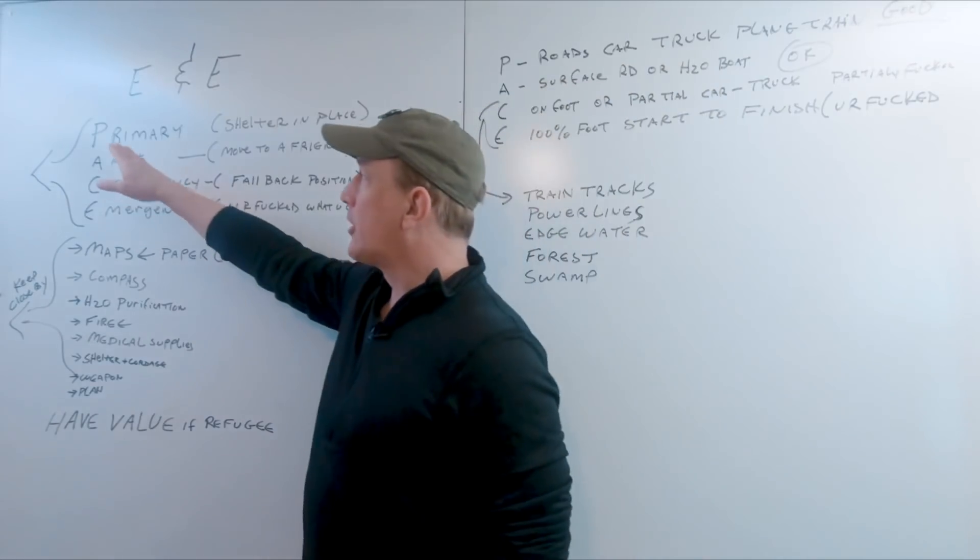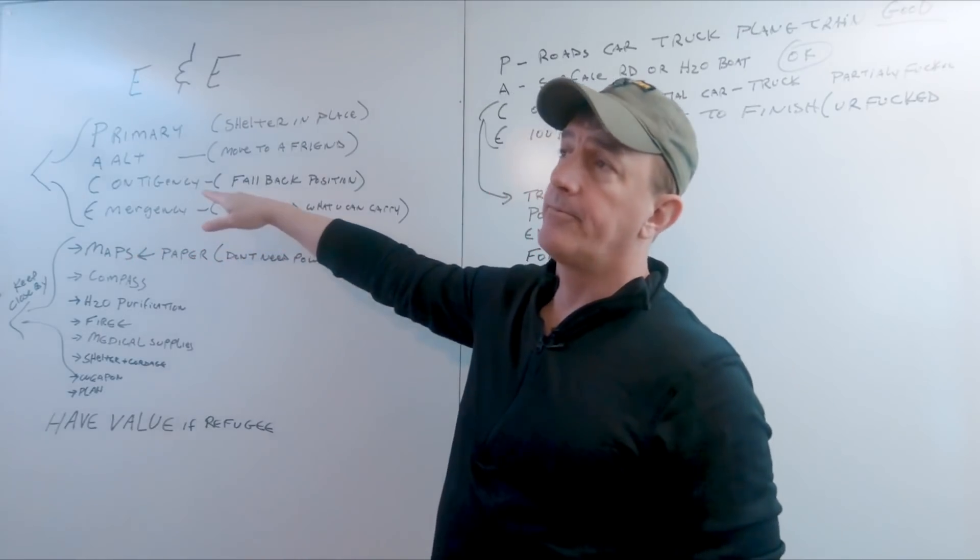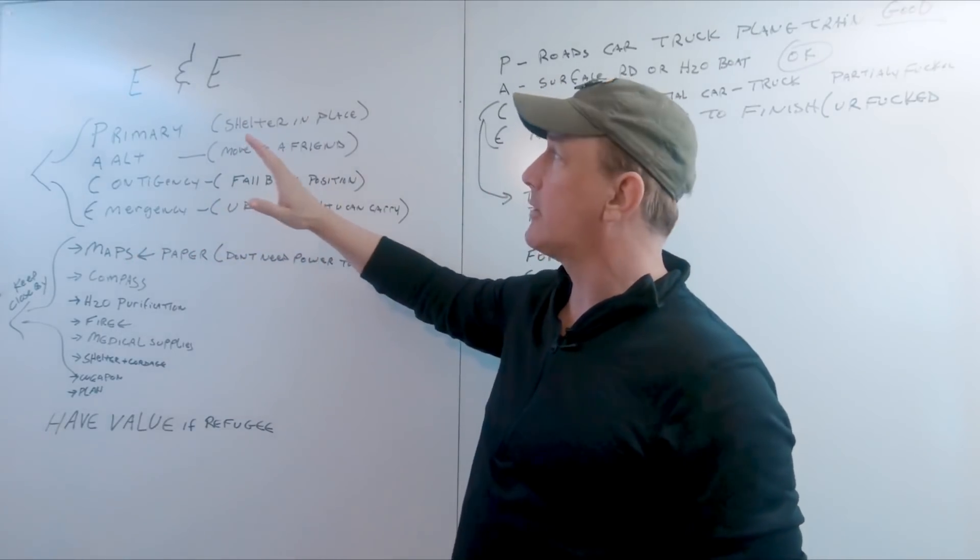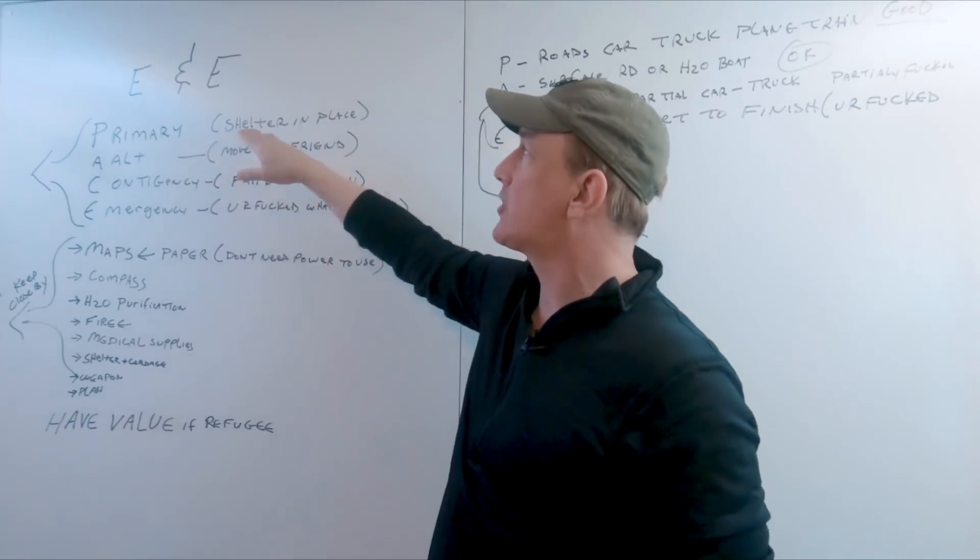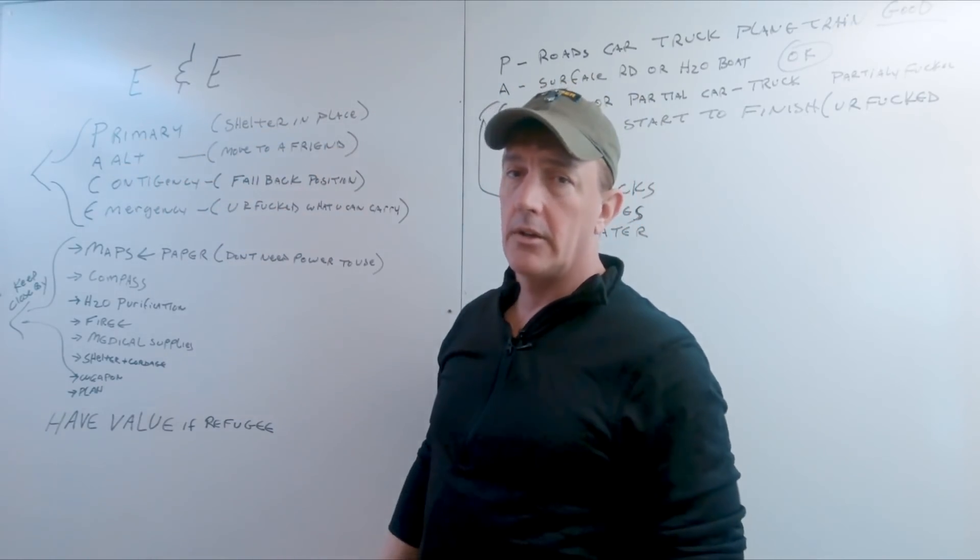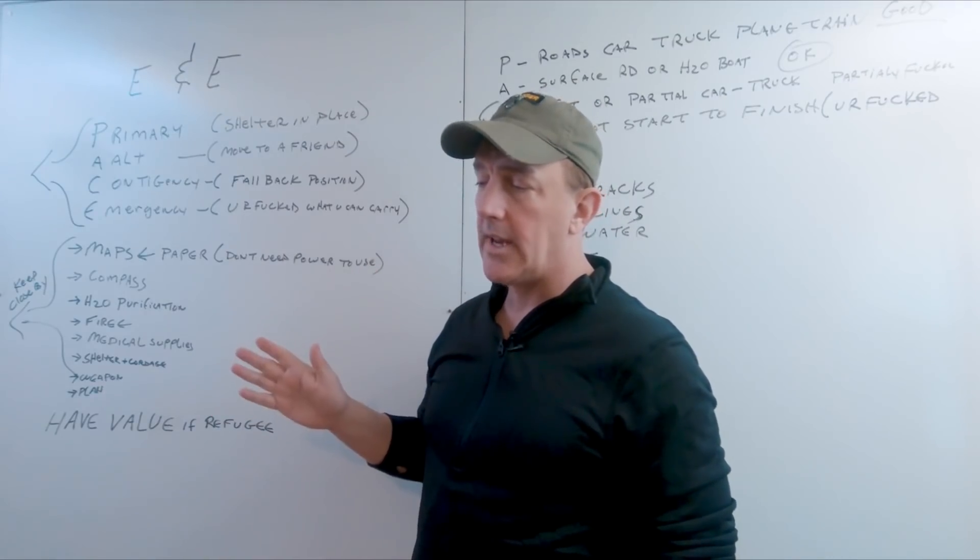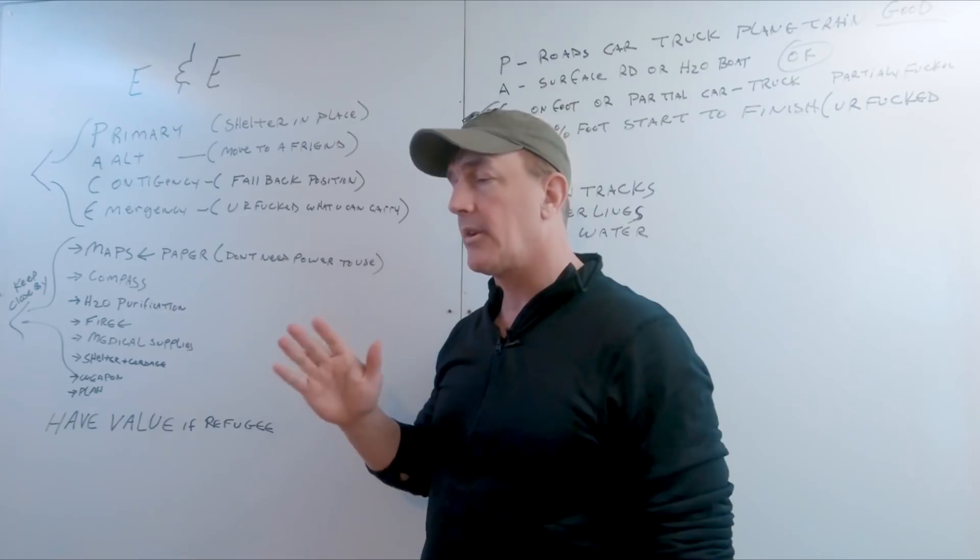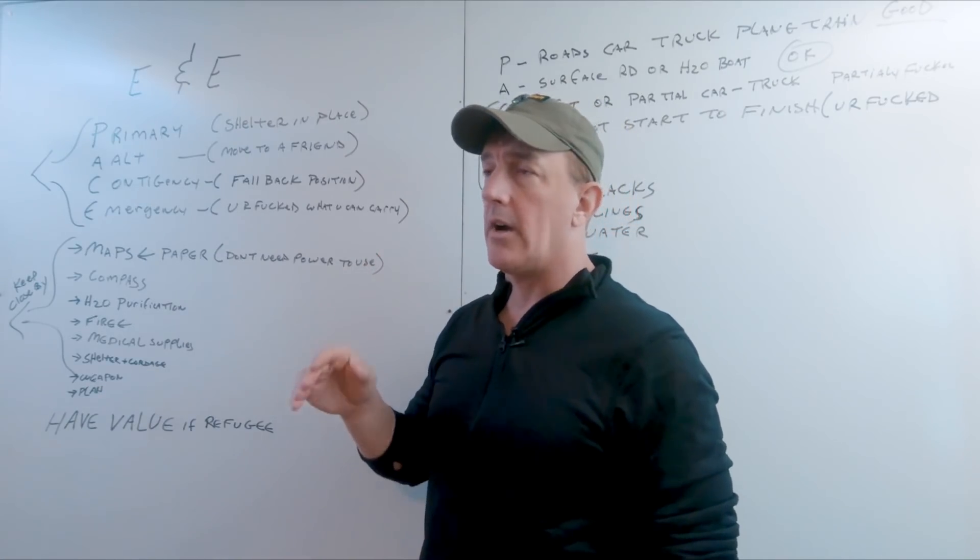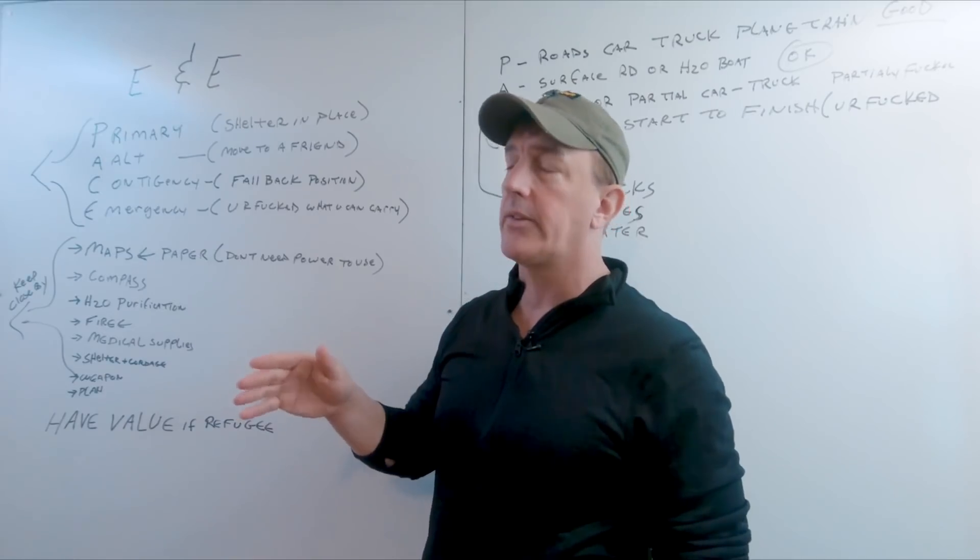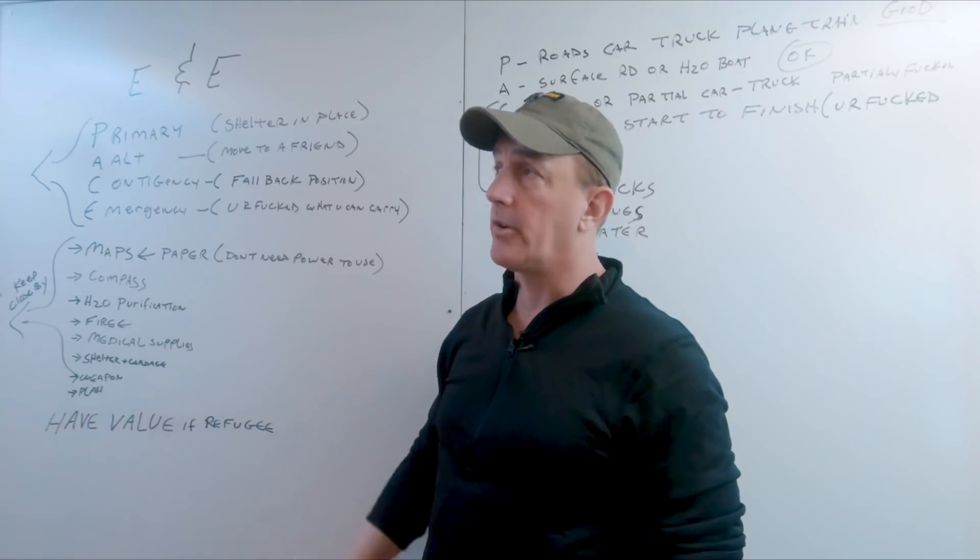Again, I went over this: primary, alternate, contingency, emergency plan. You need to put together what you're going to do. Your primary plan is probably something like shelter in place and try to ride it out. Most of the time, if there's a natural disaster or something along those lines, if you have enough food and water in a house to ride out one or two weeks, you should be fine before order is restored.